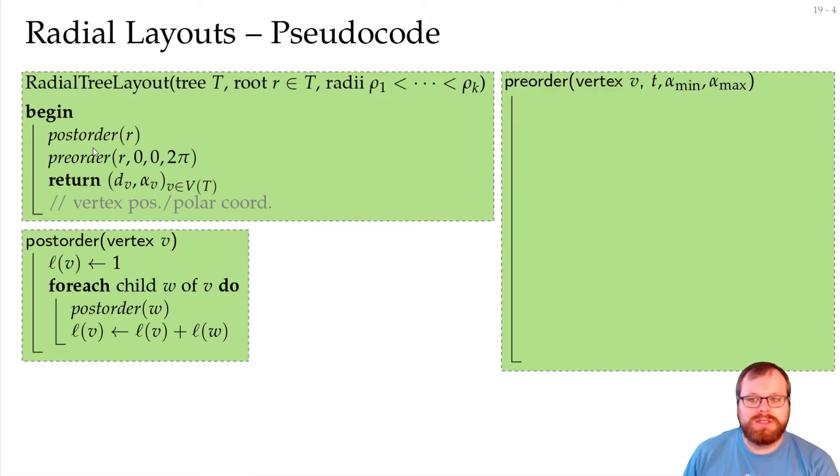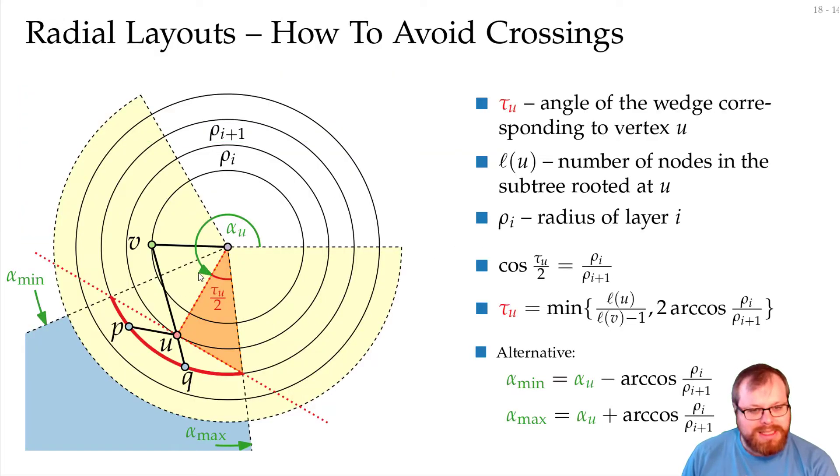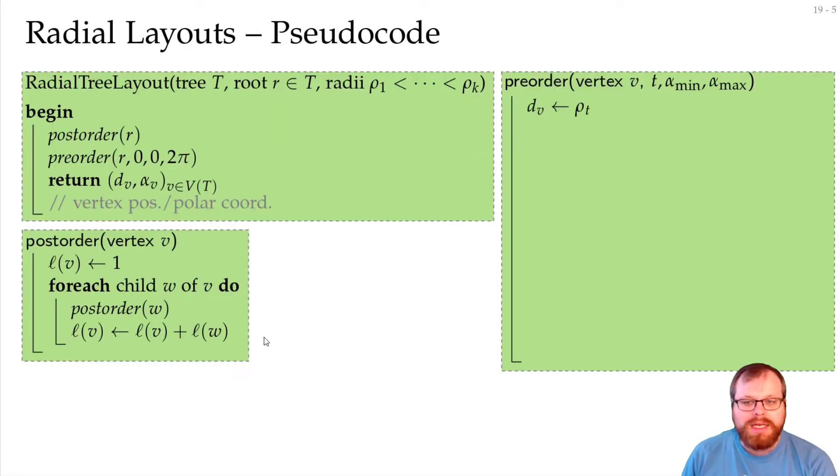The input for our pre-order traversal is a vertex v, the layer t that we want to place it on and the minimum angle and the maximum angle in which it can be placed. So here in this example it would be vertex u, the layer is i, the minimum angle is this, the maximum angle is this. And now we assign first the position to it, so the distance to the root is the radius of the layer and the angle is in the middle of these maximal angles. So that's basically the output that we get from the algorithm.